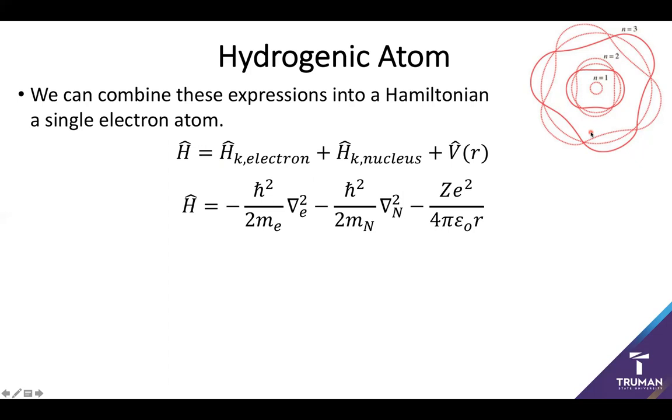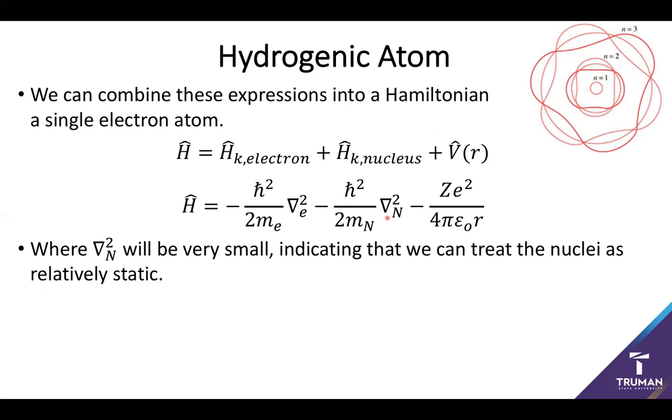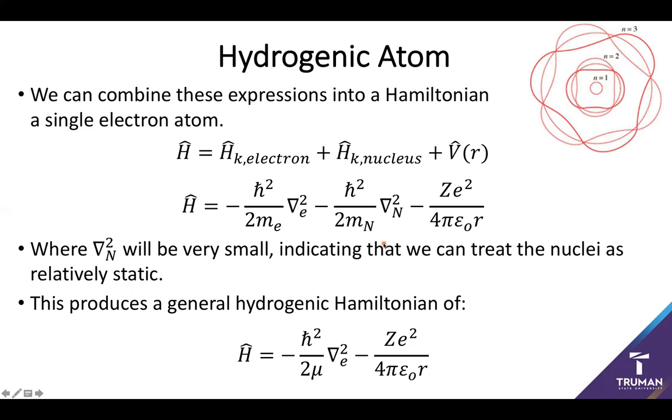We can substitute in each of our terms, and we have a more general expression for our Hamiltonian. However, with our big, heavy nucleus and a fairly small second derivative for the nuclear components, we can actually treat the nucleus as being relatively static. This makes sense—compared to the electrons, they are very slow moving and consequently have fairly low kinetic energy, even despite their greater mass. So we're typically going to drop this second term towards zero. This produces a relatively general Hamiltonian for a hydrogenic system, where we're focusing on the kinetic energy of the electron and the potential energy of the electron.